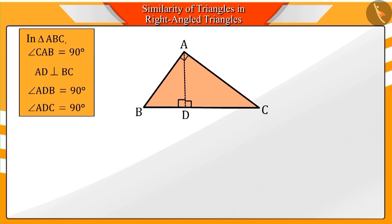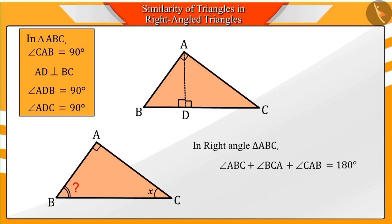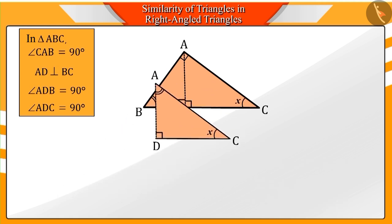If you consider the measurement of angle BCA as X in the triangle ABC, can you tell me what angle ABC will measure? You must remember that the sum of the measurement of all the angles of a triangle is 180 degrees. Therefore, the measure of the angle ABC will be 90 minus X.